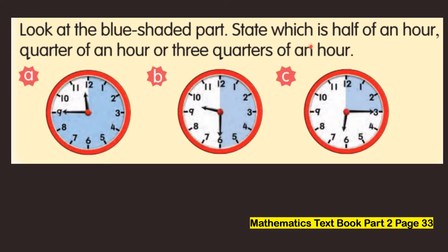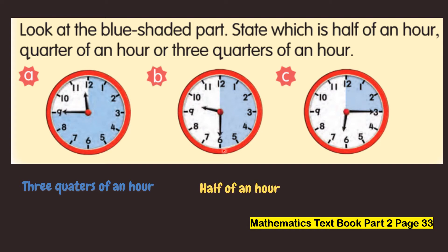Class, look at the blue shaded part. State which is half of an hour, quarter of an hour, or three quarters of an hour. The first one — the blue shaded part shows us three quarters of an hour. Look at the minute hand. It moves from twelve until it points to number nine. This is what we call three quarters of an hour. The second blue shaded part shows us half of an hour, and the minute hand moves from twelve until it points to number six. This is what we call half of an hour.